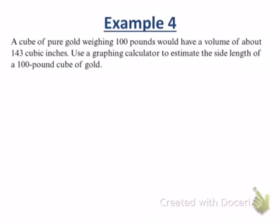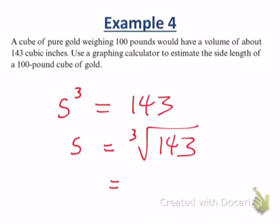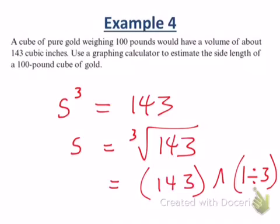Here's kind of a weird application to this. Cubes have an application in real life to volume, right? Cubic units related to volume. A cube of pure gold weighing 100 pounds would have a volume of about 143 cubic inches. This says use a graphing calculator to estimate the side length of a 100 pound gold cube of gold. Why would we use a graphing calculator to do that? I wouldn't. The volume of this cube is S cubed. That's the formula for the volume of a cube. S cubed equals 143. S equals what? The cube root of 143. And on the calculator, that is 143 raised to the one-third power.